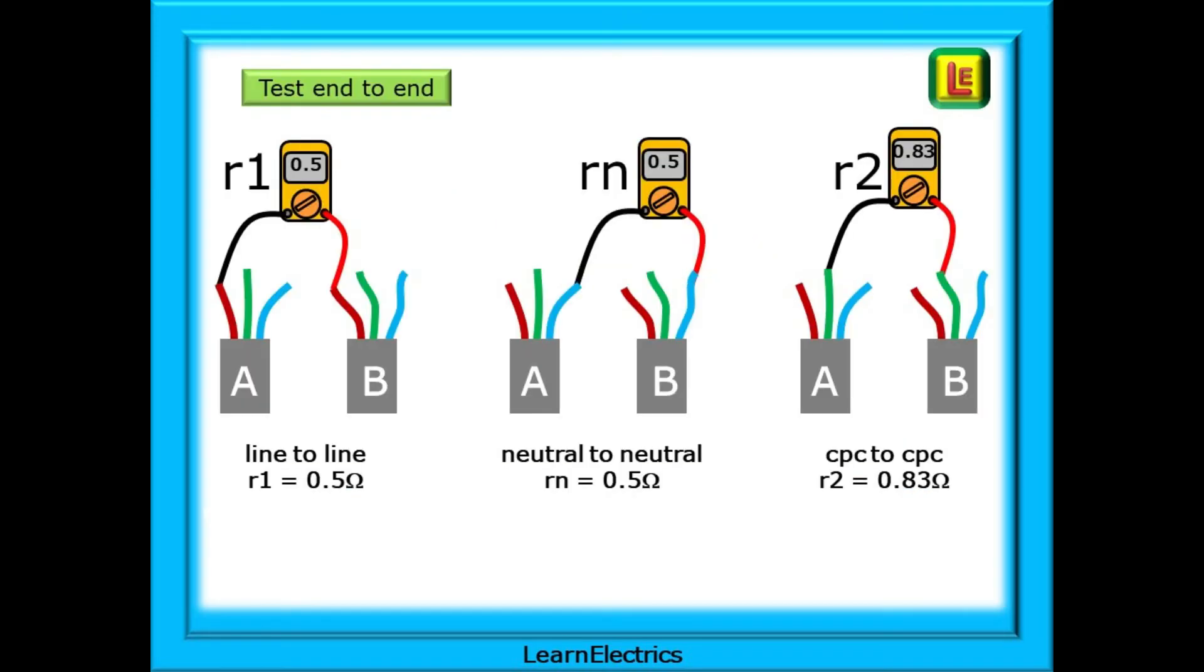Now, low ohms test between the two line conductors to get little R1, shown here as 0.5 ohms. Then test little Rn between the two neutral conductors, and you should get 0.5 ohms again. It's the same size copper as the line, and going to the same places. So it should, within reason, be the same value.